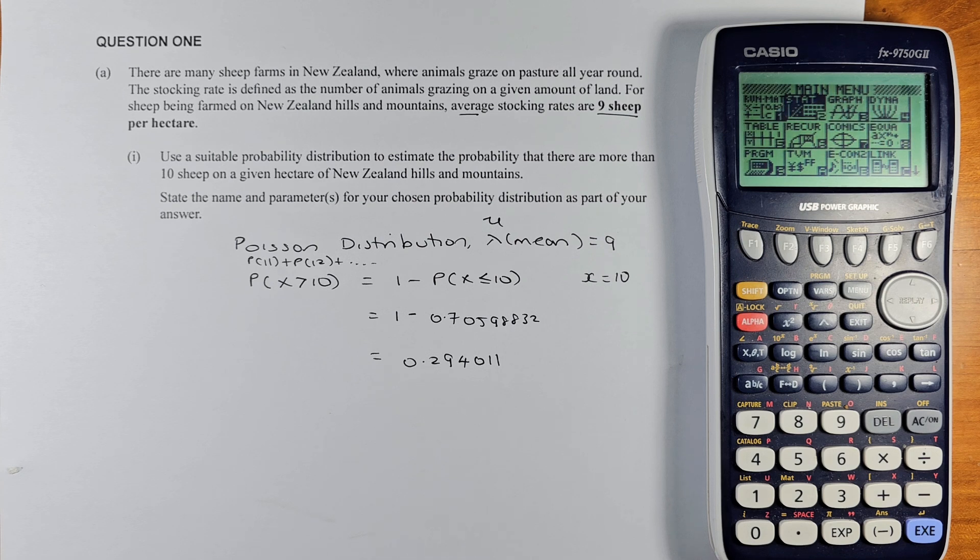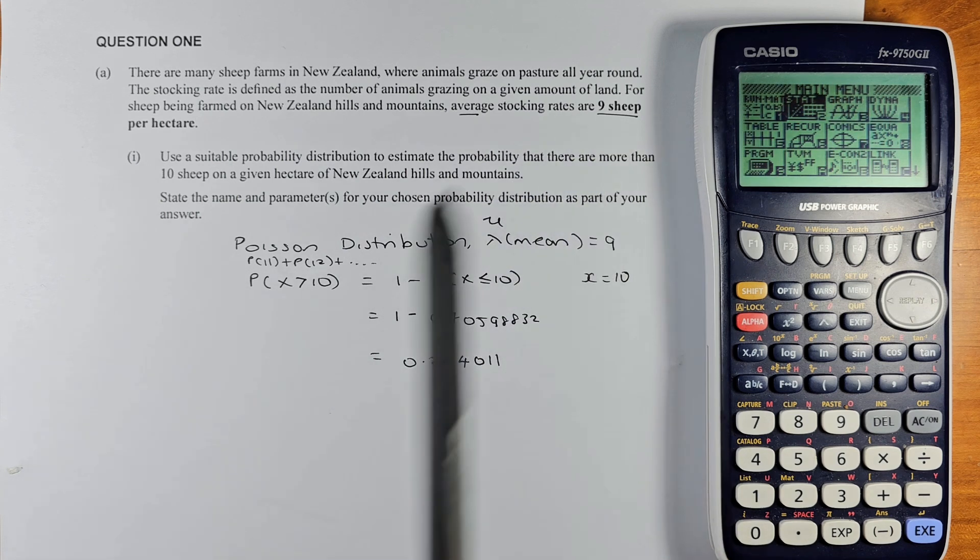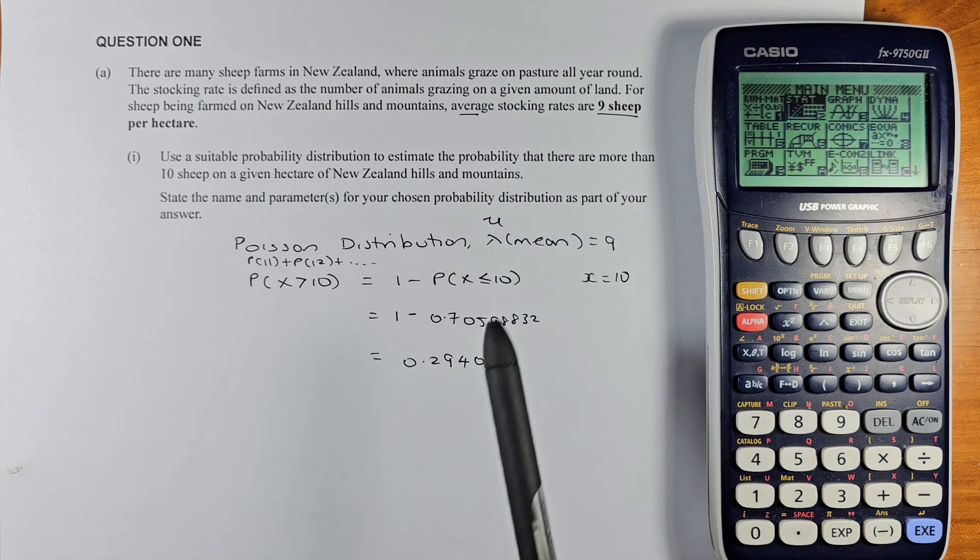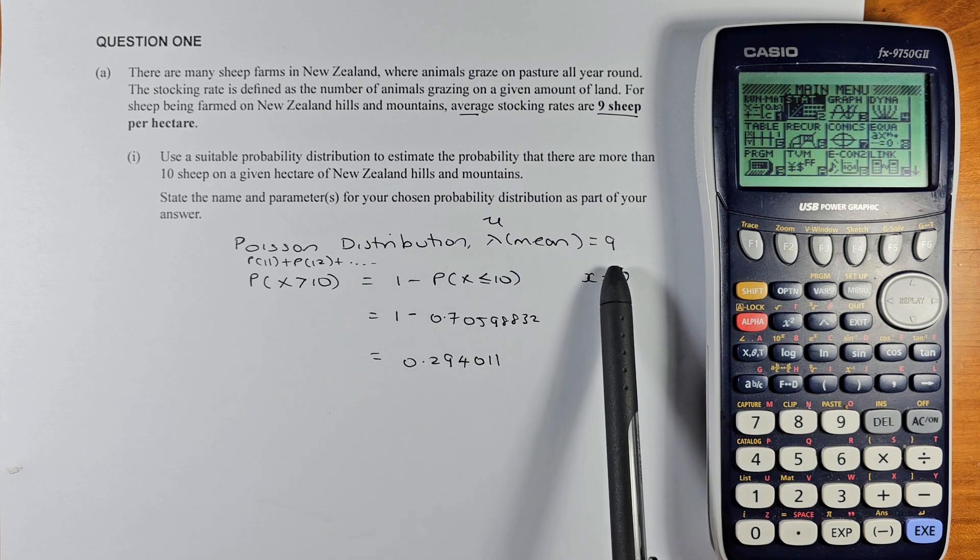Okay, so there are 4 or 5 possible distributions. It cannot be normal, it cannot be binomial because you do not have a fixed number of trials. It cannot be triangular and it cannot be rectangular. So the only possible is going to be Poisson. We're going to choose Poisson distribution and because only the mean is given, the mean is 9, so we're going to put nu or lambda equals 9.